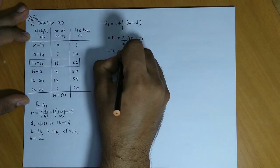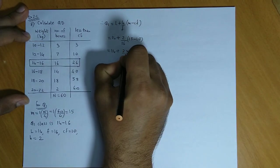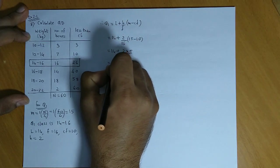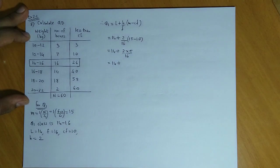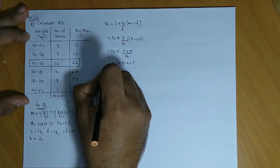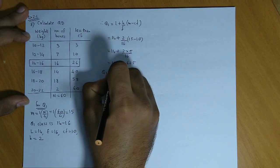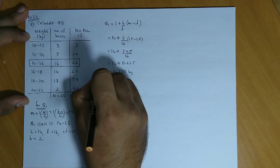So this is 14 plus 2 times the difference, which is 5, divided by 16. That is 14 plus 10 divided by 16. If you divide 10 by 16, you get 0.625. So Q1 value is 14.625 kilograms.